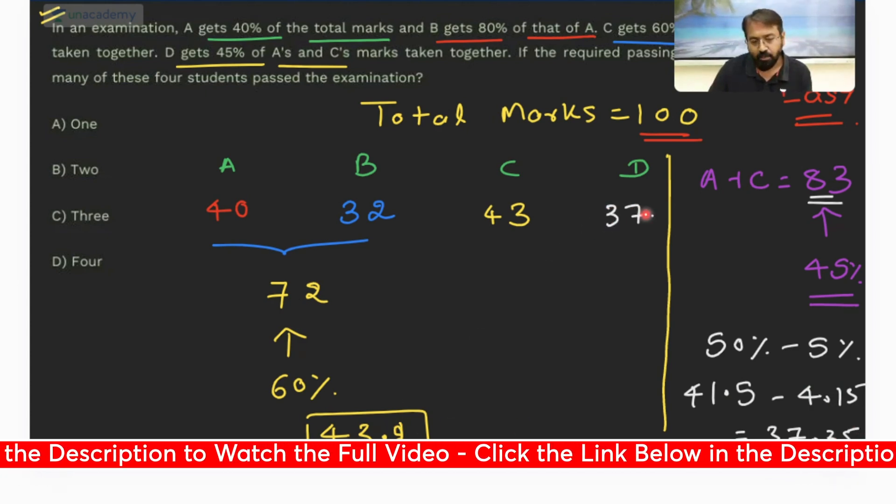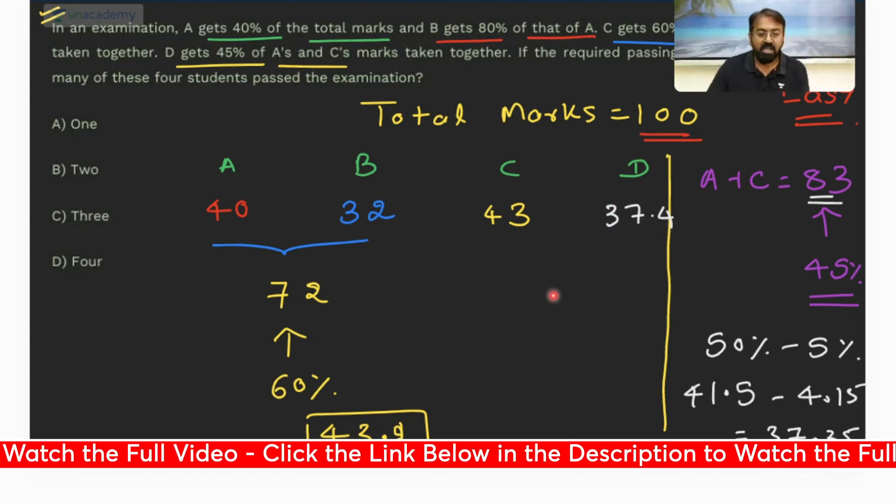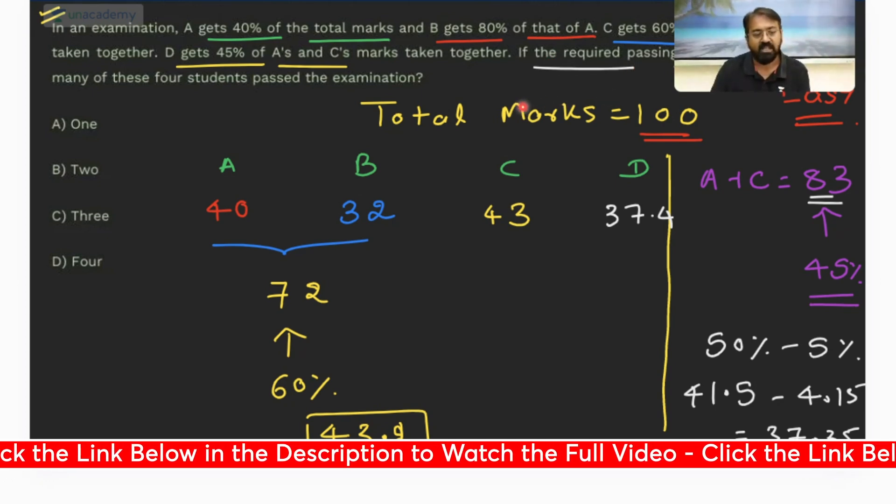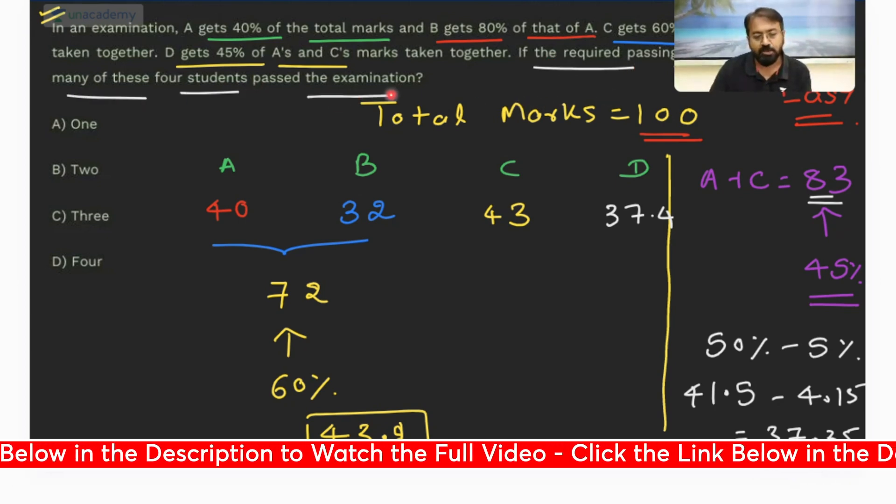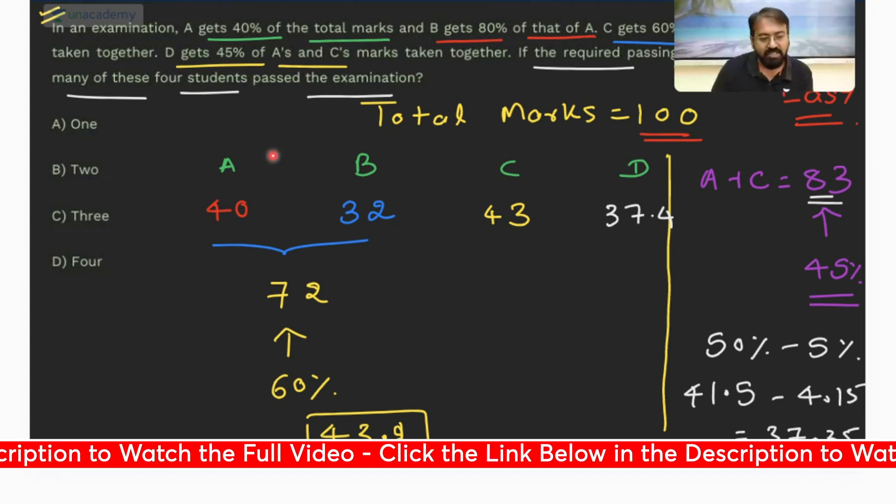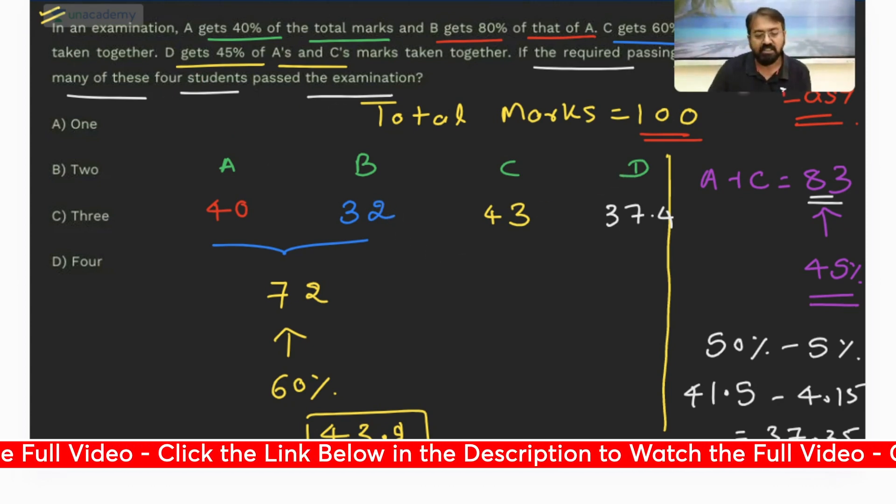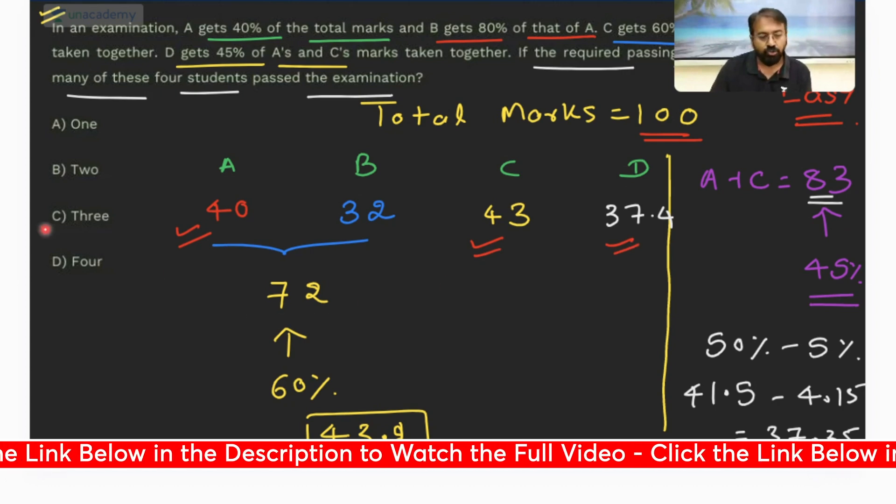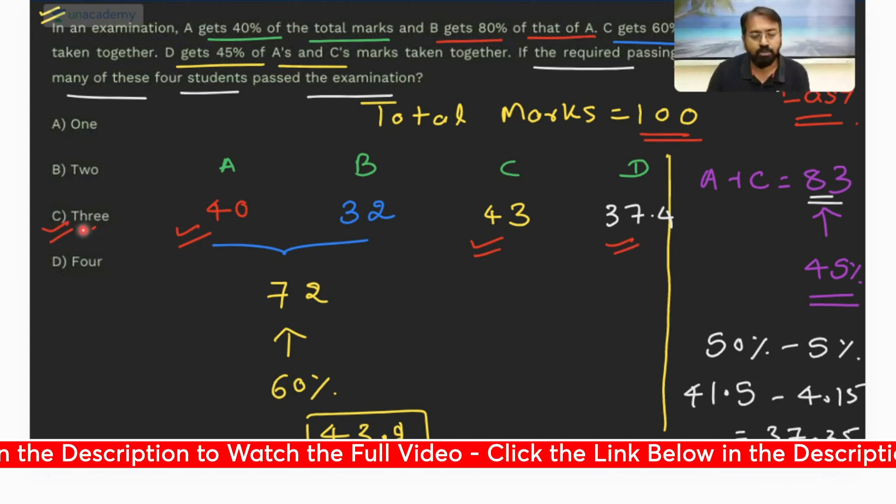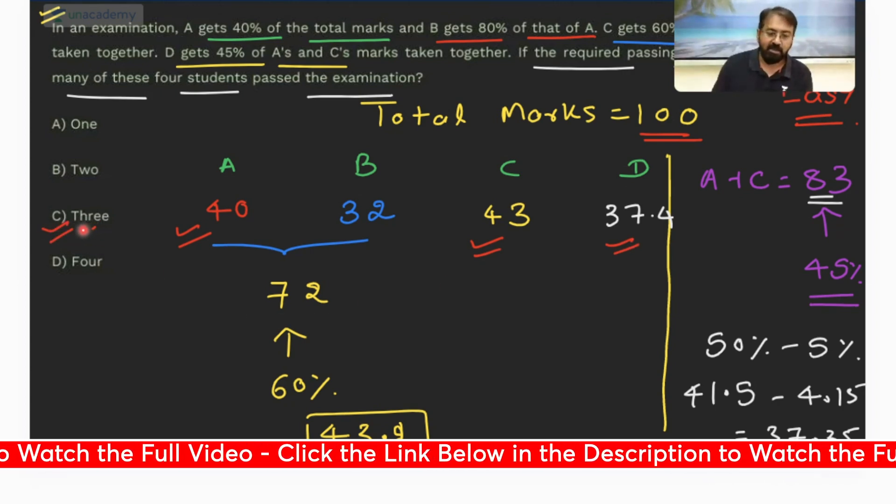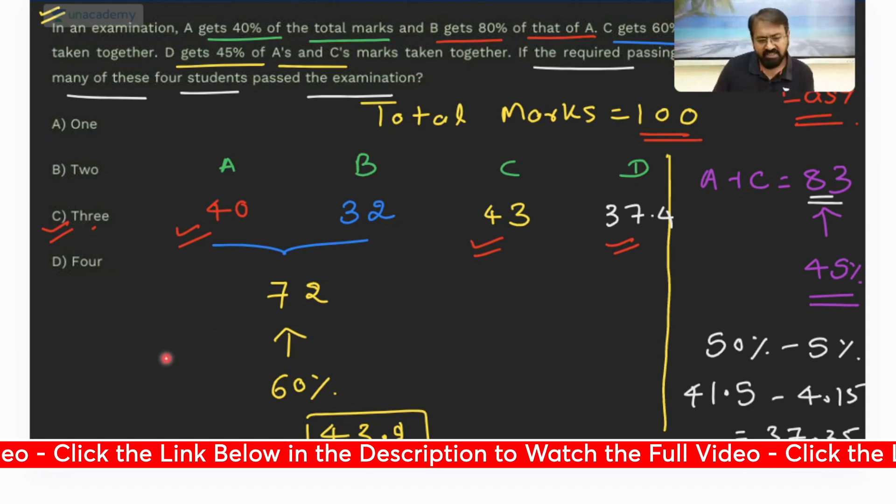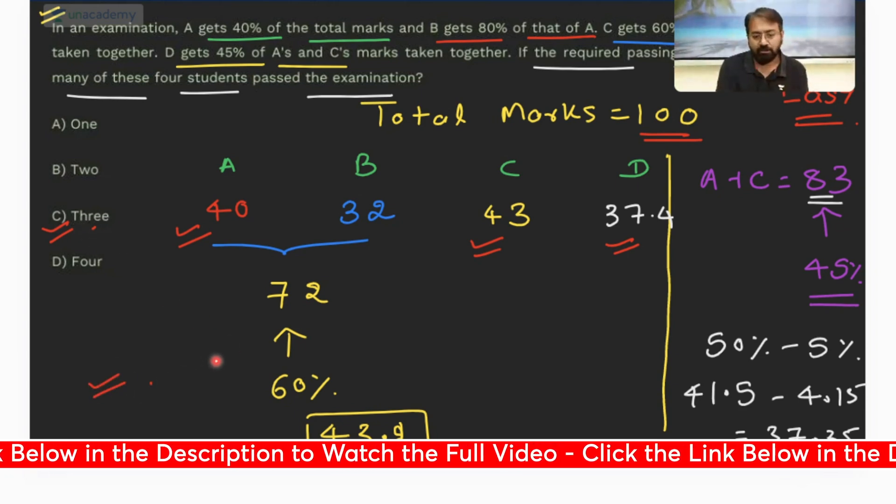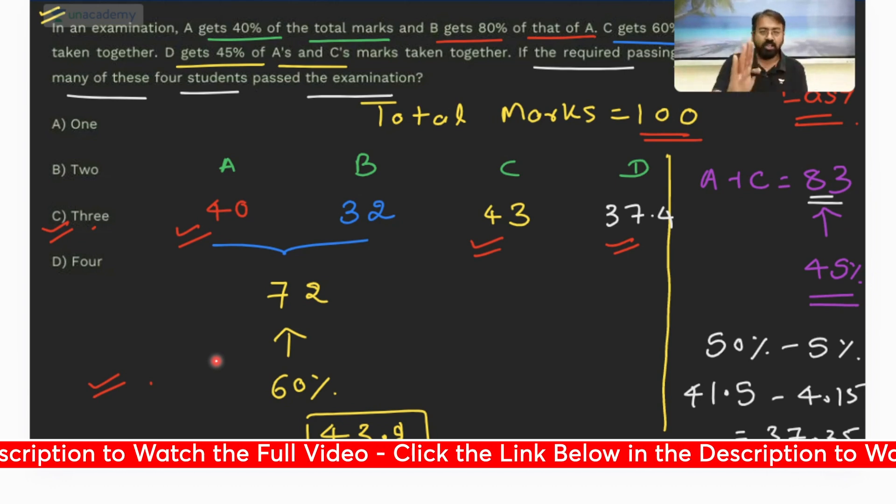Now the question is if the required passing marks are 36%, how many of these four candidates pass the examination? So how many candidates have scored more than 36%? It's A, C, and D. So three candidates have scored more than 36% marks. So yes, definitely this was an easy question, you just have to make some accurate calculations.